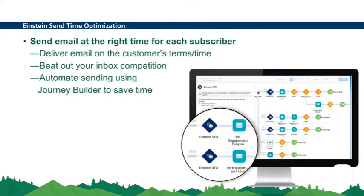The third studio is Einstein Send Time Optimization. This feature helps you send the right email to the right customer at the right time. For example, if someone typically opens their inbox at 2 o'clock during lunch, you'd want to send them an email at that time when they're more likely to open or click. This helps you beat inbox competition. You can also automate sending using Journey Builder, and use it to segment customers and send the appropriate message at the right time.